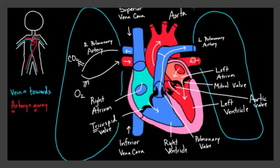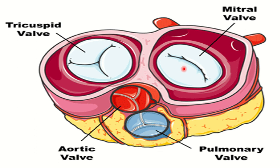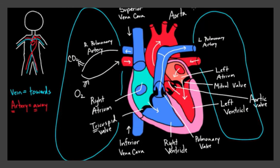Then the pulmonary vein pours the blood into the left atrium. Then the mitral valve opens up. See, this is the mitral valve which is not like the tricuspid valve, and this is the aortic valve, and this is the pulmonary valve. These three are alike whereas this is different. When the blood passes through the mitral valve, it goes into the left ventricle. Now the aortic valve opens up and through the aorta, which is the largest artery in the human body, the blood is sent for distribution among the organs and this artery splits up.